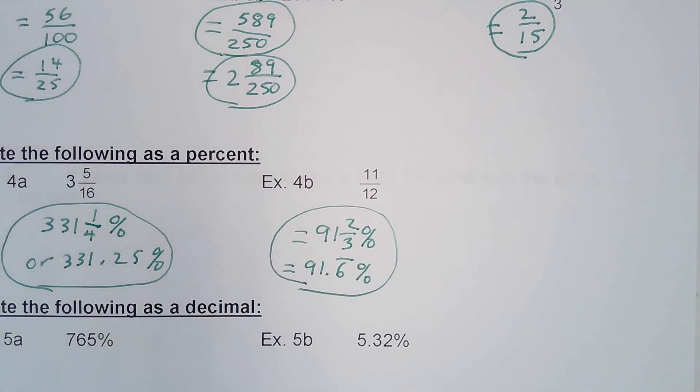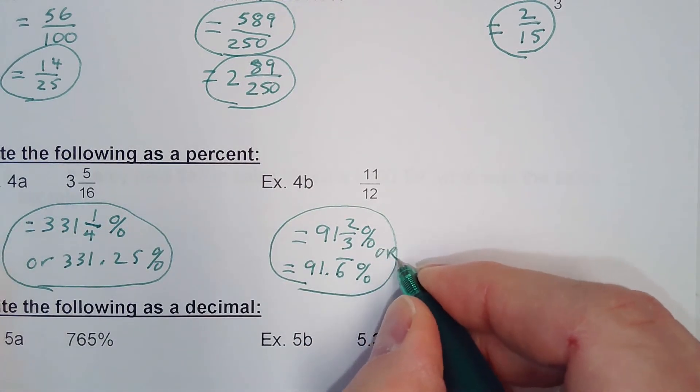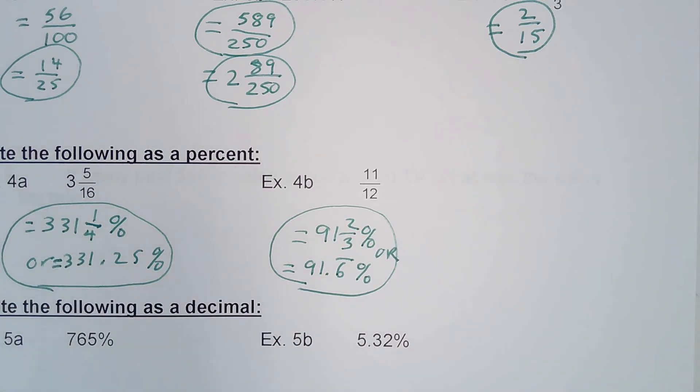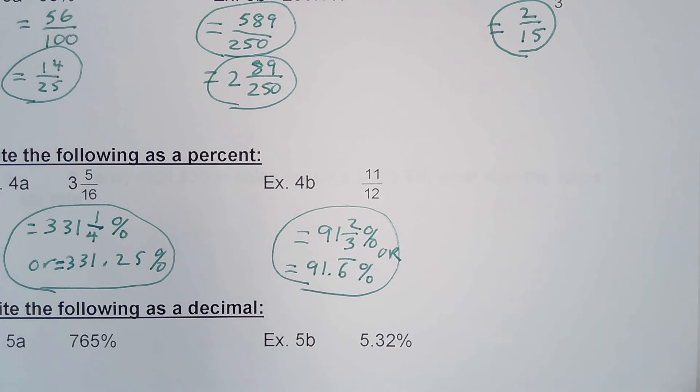Now MyLabsPlus might tell you to round off. If that's the case, you just round off to the appropriate place value.